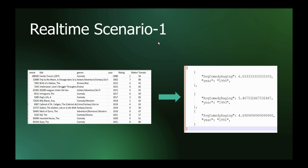We are considering movies data as an example. The movies data has title, genre, year, and rating, and it has around 10,000 records. What we are currently doing is getting the average rating of comedy movies for each year, and we are saving it into Cosmos database. We are taking Azure storage as a data source and Cosmos database as the destination.